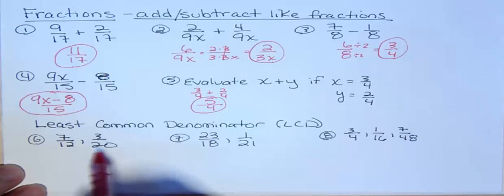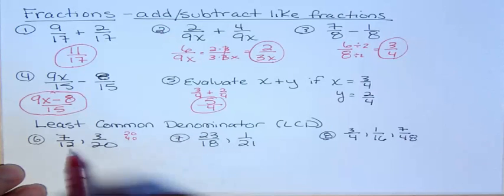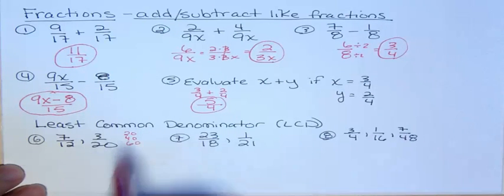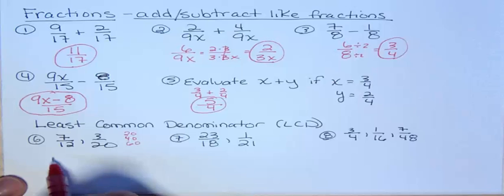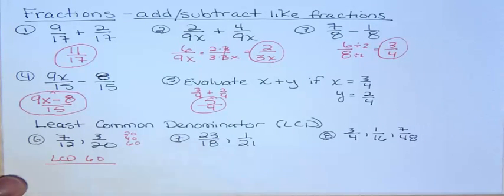So the bigger number here is 20. 12 does not go into 20. 12 does not go into 40. You could be checking that on your calculator by dividing each of those by 12 to see. They both go into 60, so the least common denominator for this would be 60. That's the first number that 20 goes into and 12 also goes into.